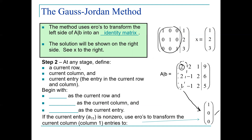When we perform these elementary row operations with the goal of converting the original matrix into an identity matrix, after we are done with that process, once we get to this format we know that we have obtained the solution for the linear system of equations.